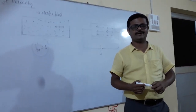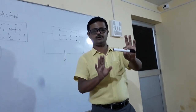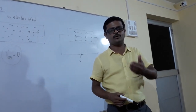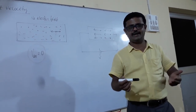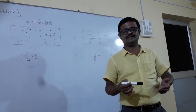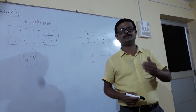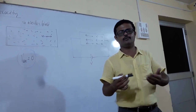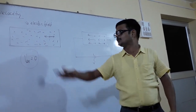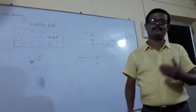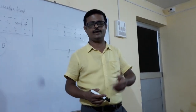Whenever you give a potential difference to an insulator, no current can flow — only in a conductor. Because in a conductor there are a large number of free electrons. Whenever we give potential difference, the electrons can move in a particular direction. The average velocity with which the electrons are moving toward the positive terminal is called drift velocity. In the next lecture you will get a mathematical derivation for drift velocity and the relation between drift velocity and electric current.